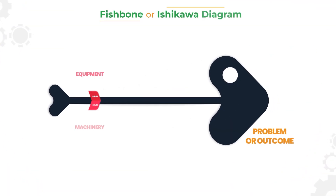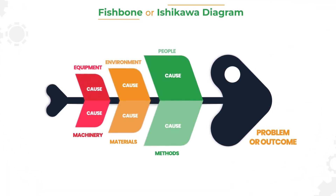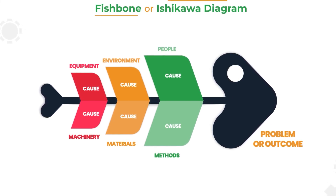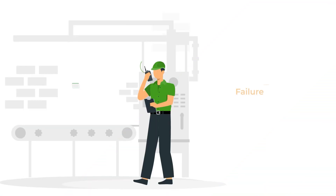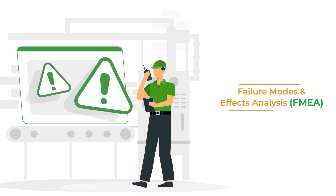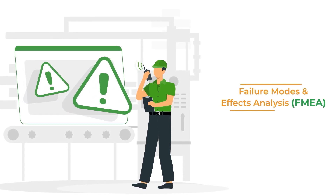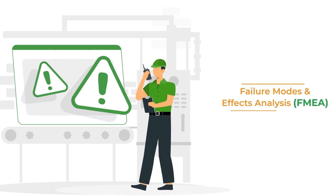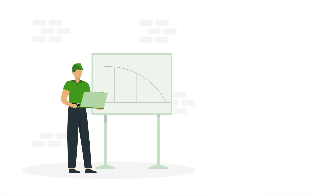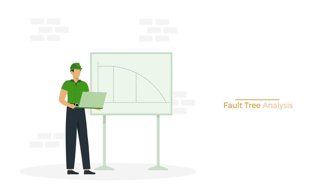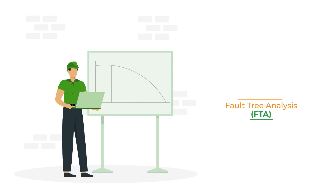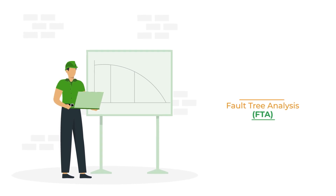The fishbone or Ishikawa diagram, which visualizes multiple potential causes of failure in a structured way. Failure modes and effects analysis, or FMEA, which predicts potential failures by analyzing past data and using it to predict future points of failure. And fault tree analysis, or FTA, which utilizes logic to model how failures trickle through a system to cause system-wide failures.